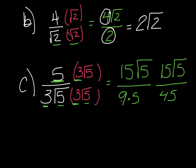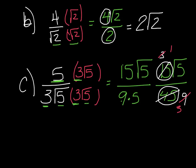I think that can get simplified because these two numbers outside are both divisible by 5. If I divide 15 by 5, I get 3, and 45 by 5 gives me 9. Now, 3 goes into 3 once and into 9 three times. So my final answer is radical 5 all over 3.